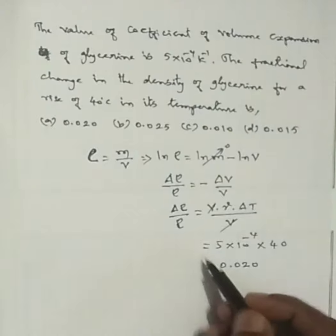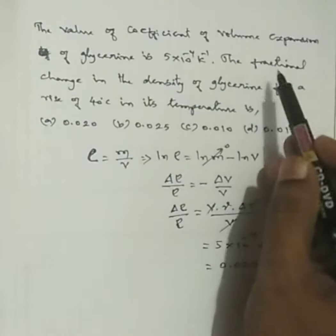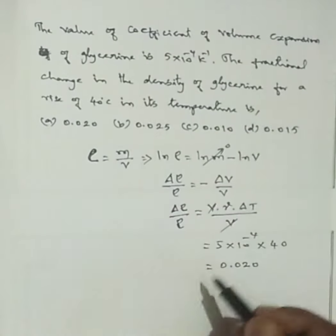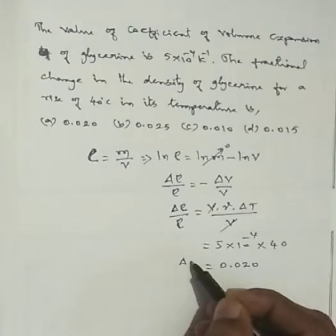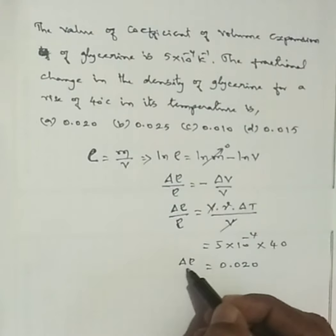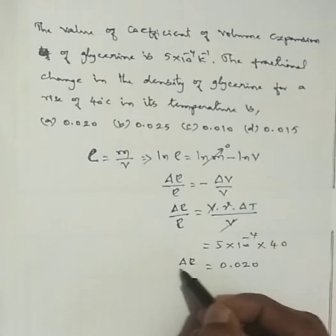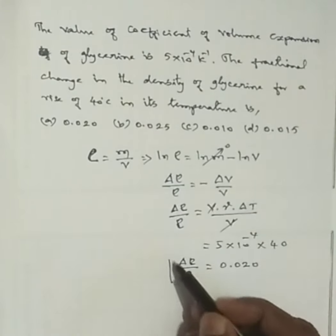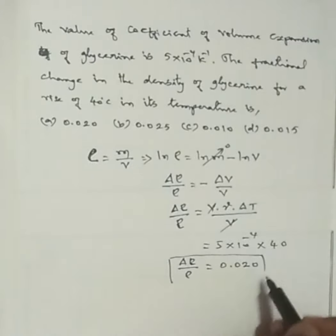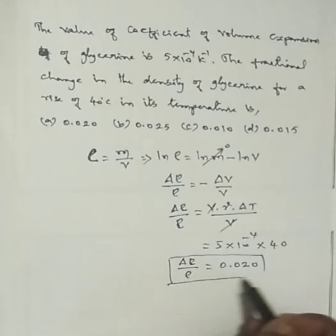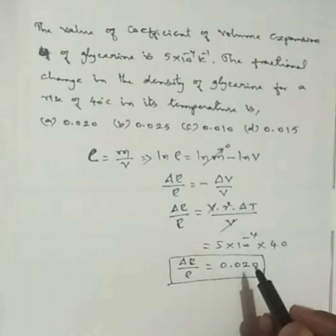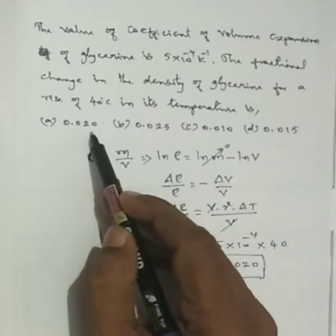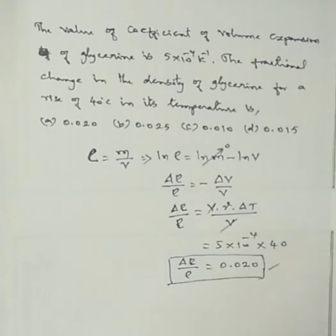So, the fractional change in density, delta rho divided by rho, is 0.02.